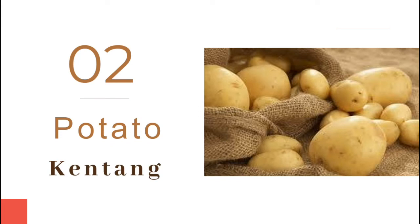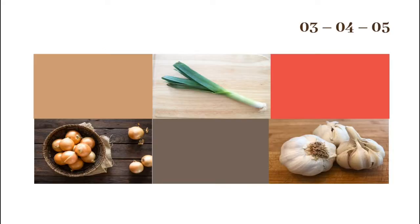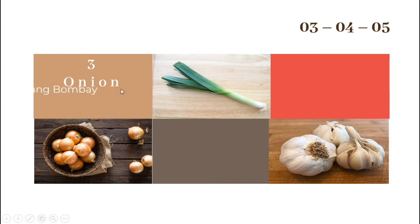Sekarang we move to number three. Namanya adalah onion. O-N-I-O-N. Onion. Artinya adalah bawang bombay. Jadi, onion adalah bawang bombay. Number four, di sini ada yang berwarna hijau. Namanya adalah leeks. L-E-E-K-S. Leeks. Bahasa Indonesia-nya adalah daun bawang. Jadi, leeks adalah daun bawang.